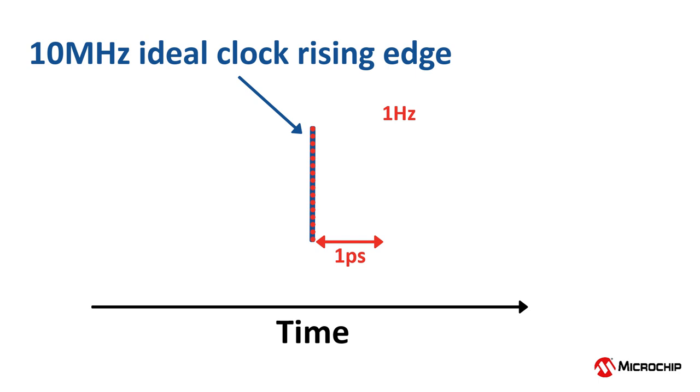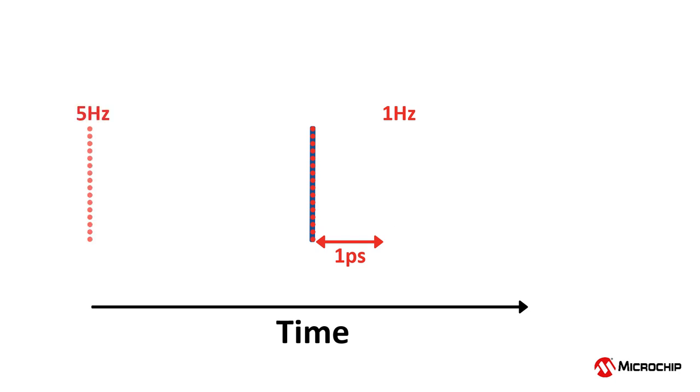Let's say this real clock also has another non-ideal edge that occurs five times a second, and its time interval error amplitude is four picoseconds. This means that this real, non-ideal clock also has a TIE, and its amplitude is four picoseconds, and it occurs at a rate of five hertz. The real clock may also have a non-ideal edge that occurs, say, 17 times per second, with a time interval error of 0.5 picoseconds, which would mean a time interval error amplitude of 0.5 picoseconds occurring at a rate of 17 hertz, and so on.